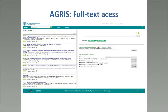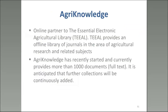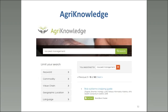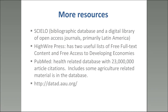Here's an example of the AGRIS page — you can go and search, then find resources, abstracts, and also possibly links to full text resources. Another fairly new one is AgriKnowledge, a partner of the Essential Electronic Agriculture Library at Cornell University, funded by the Gates Foundation. AgriKnowledge has a new collection of online research with books, articles, and other areas. On the left you can search and limit by keyword, commodity, location, or language.